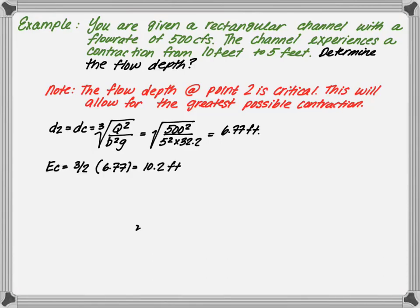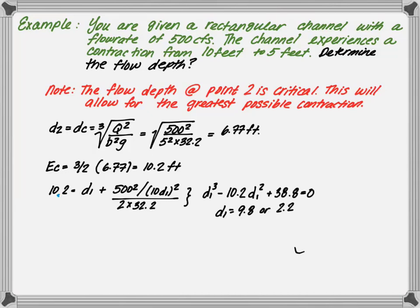Next, the energy at point 2 is 3/2 times 6.77, which equals 10.2 feet. We set 10.2 feet equal to the depth at point 1 plus the velocity squared — that is, the flow rate squared divided by (10 times the depth)², all divided by 2 times 32.2. Rearranging the equation and using goal seek, we get two flow depths: D1 equals 9.8 feet or 2.2 feet. Since we want a subcritical channel going through a contraction, we select a depth of 9.8 feet at point 1.